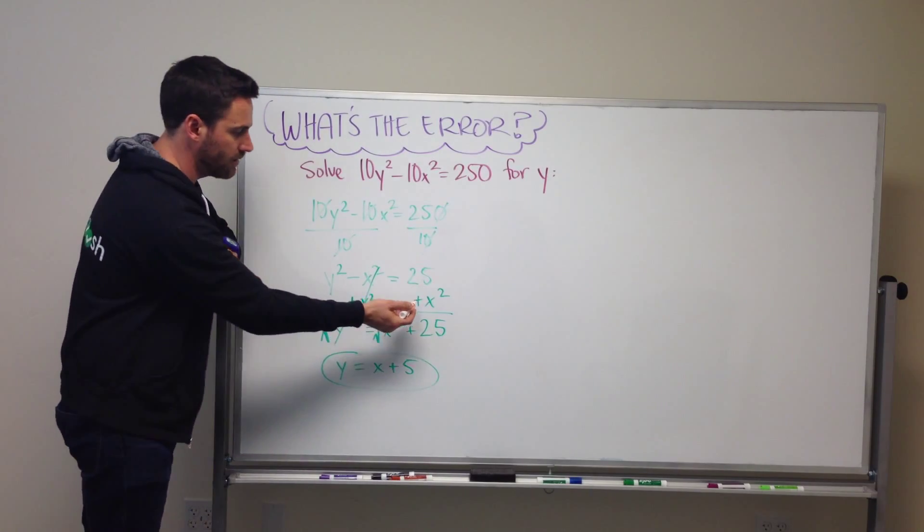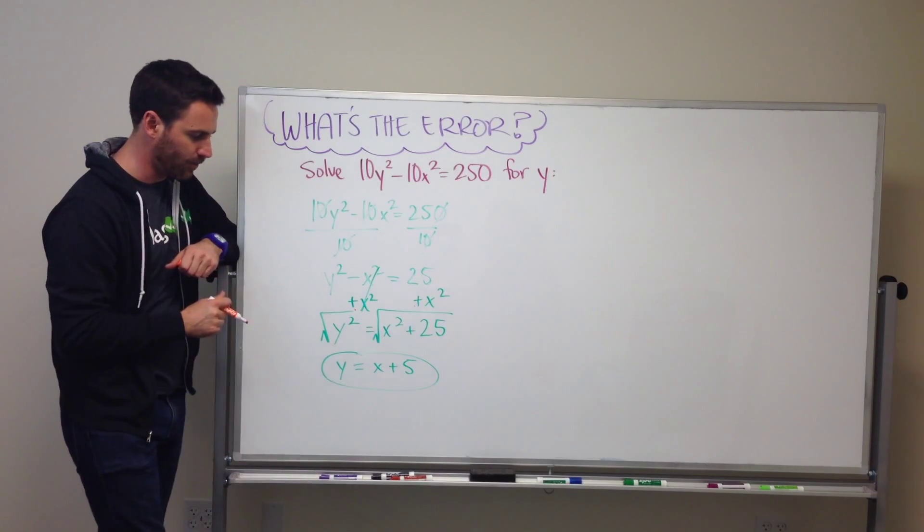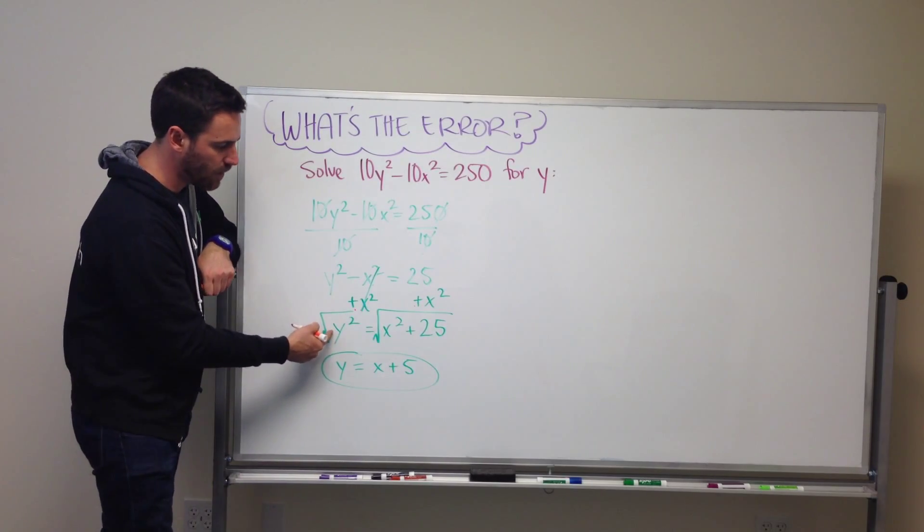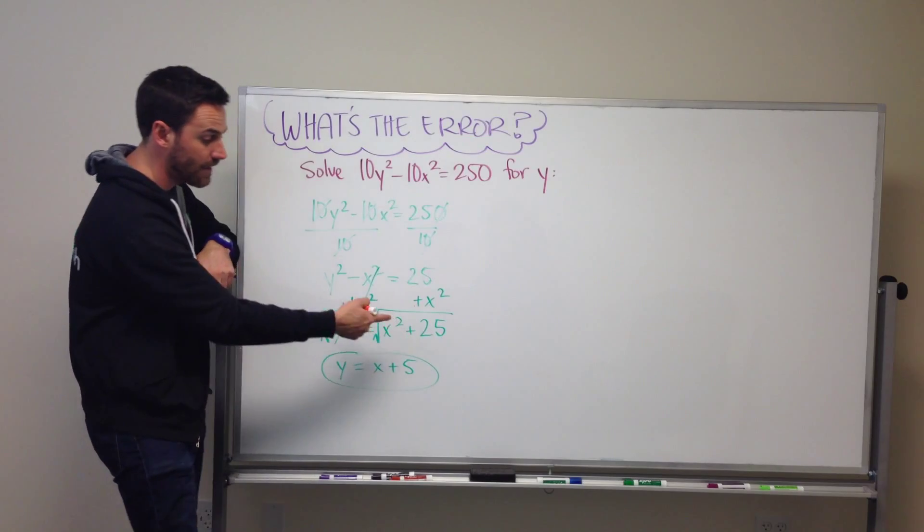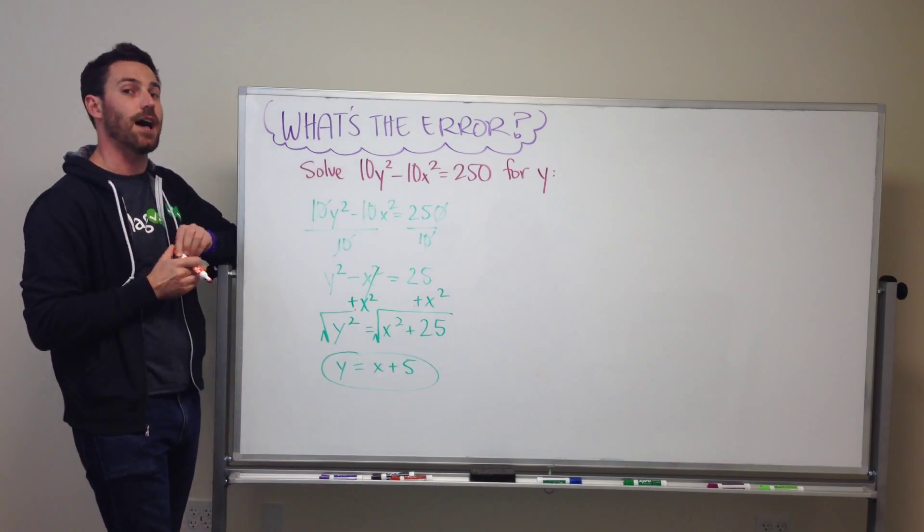Then they add x² to both sides to eliminate and get y by itself on one side. Then they get y² = x² + 25 and they take the square root of all of it to end up with y = x + 5.